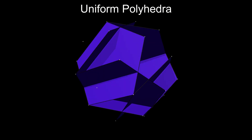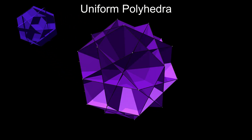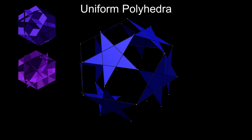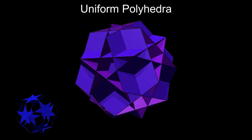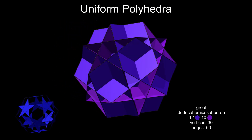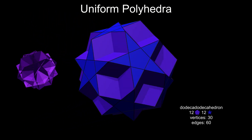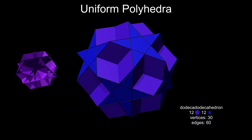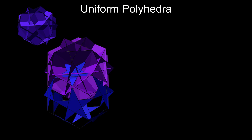But the icosidodecahedron can also be faceted with another edge arrangement, using pentagons, hexagons, or pentagrams. These can be paired to form more uniform polyhedra. Pentagons and hexagons form the great dodecahemicosahedron. Pentagons and pentagrams form the dodeca-dodecahedron, which we already know about. And hexagons and pentagrams form the small dodecahemicosahedron.